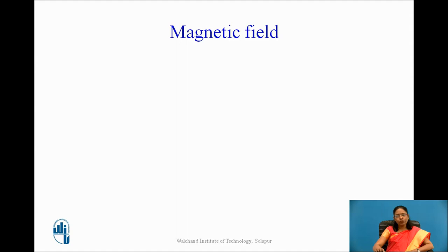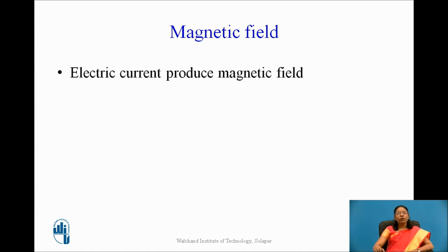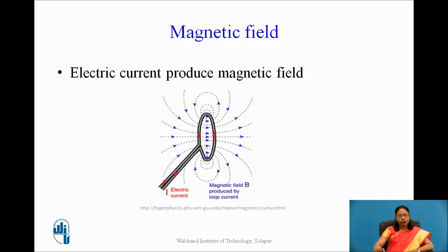The electric current produces a magnetic field. When we pass electric current through a loop or any current carrying conductor, flux lines are formed around the conductor, and these are nothing but the magnetic field lines.